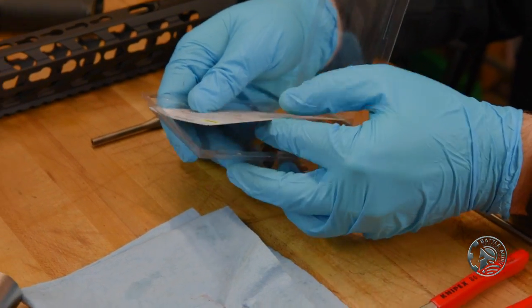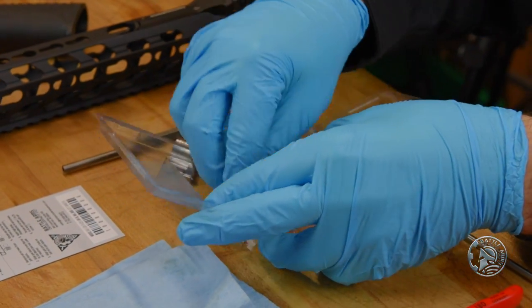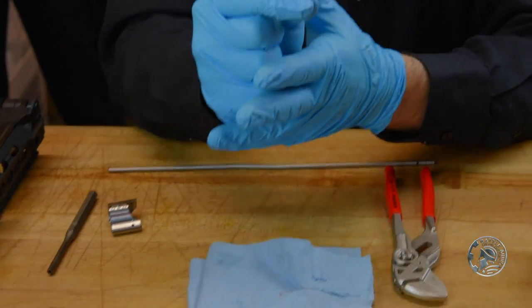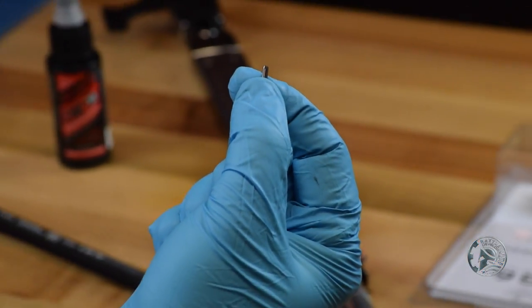First thing we want to do is get our gas tube and gas block put together. We have a very small pin and this is what's going to hold the gas tube into the gas block.